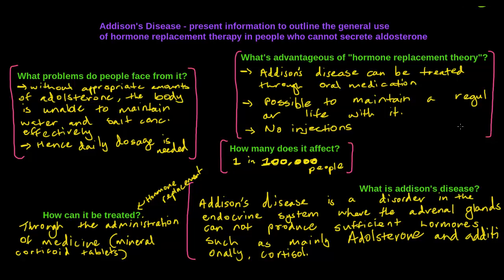Now, how many people does Addison's disease actually affect? It affects 1 in 100,000 people, which is quite a lot. It's actually fairly common, and if you think about it, Australia's population is around 22 to 23 million — so if you calculate it, it is quite a big number and it does affect many people.